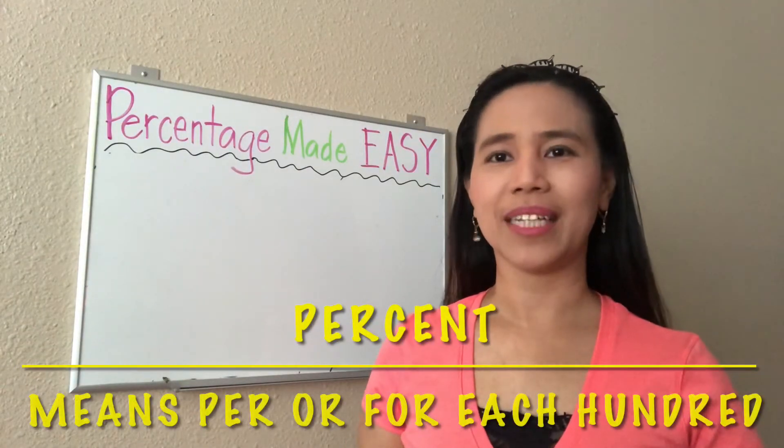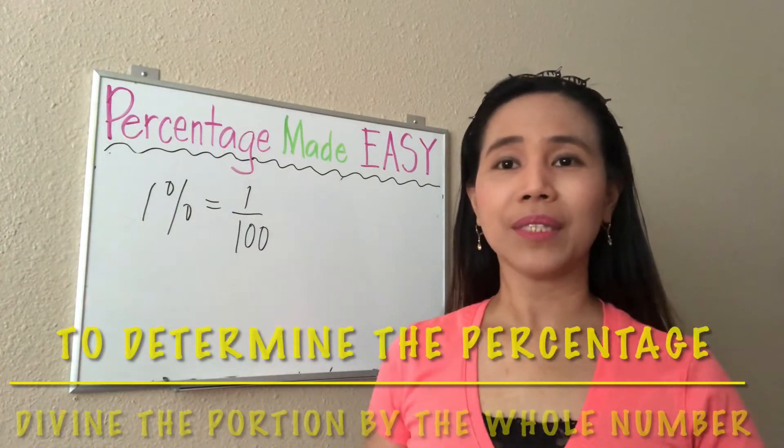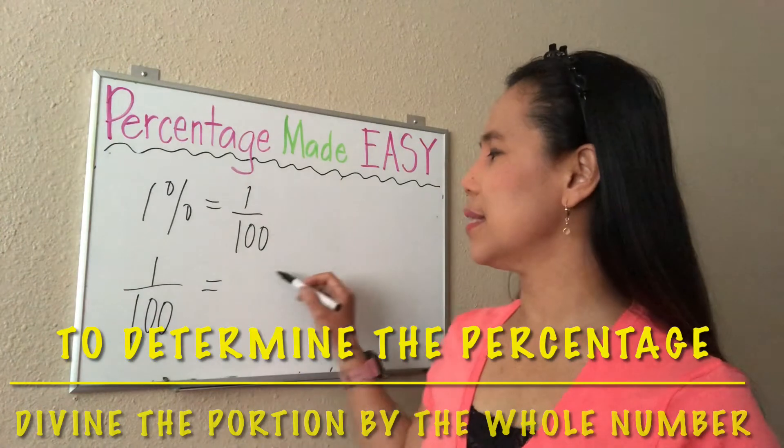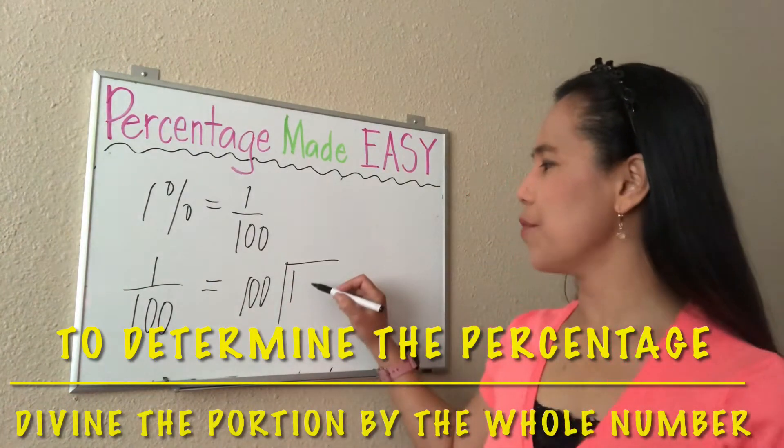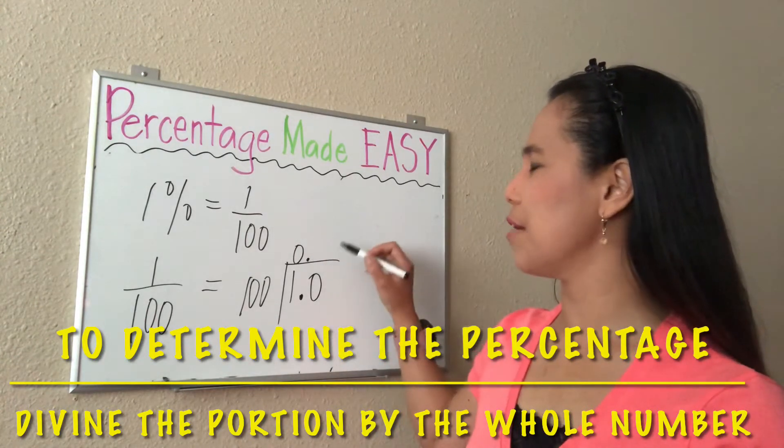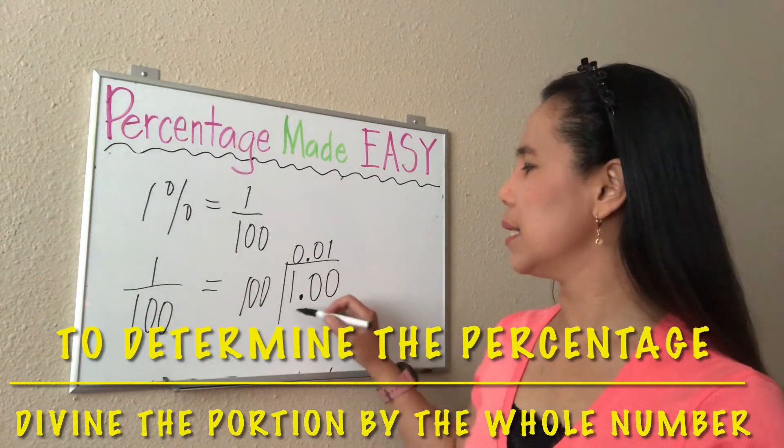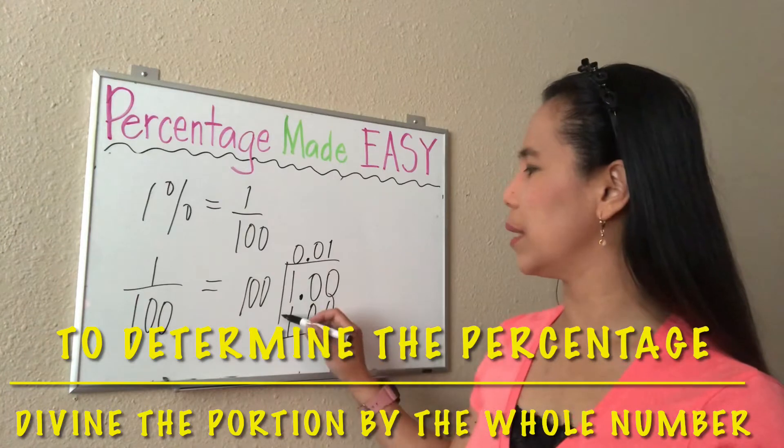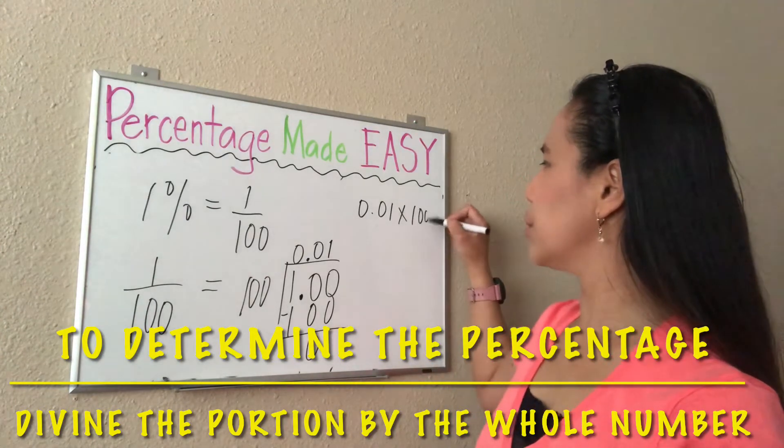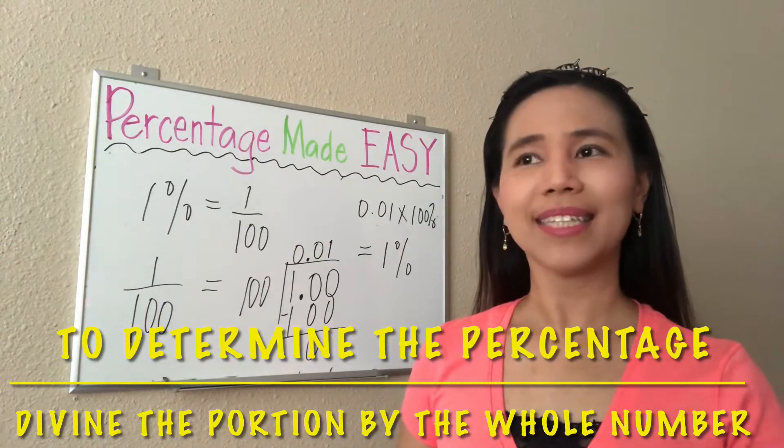Let's keep in mind that percent means for each hundred, meaning 1% is equal to 1 over 100. To determine the percentage, you divide the portion of the whole by the whole itself and then multiply by 100. So 1 over 100 is 1 divided by 100, which equals 0.01, and multiplying by 100 gives us 1%. That's how we do percentage, however there's a way to make it simple, quick, and easy.